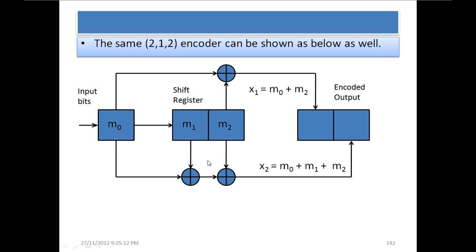For X2, M0 is added to M1 and M2, giving M0 + M1 + M2 as the encoded output. At every time step, one input bit affects not just the present encoded value but also future encoded values as well.